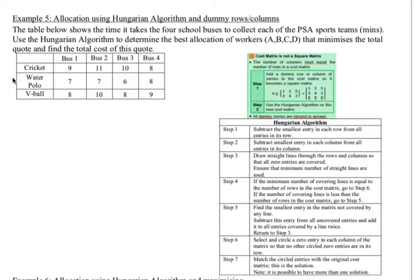We've got cricket, water polo, and volleyball, and we have bus 1, 2, 3, and 4. So as we can see we've got more buses than we do sports. So we always need to have, when we're doing Hungarian algorithm, the number of rows equaling the number of columns. So in this case we need to add what's known as a dummy row.